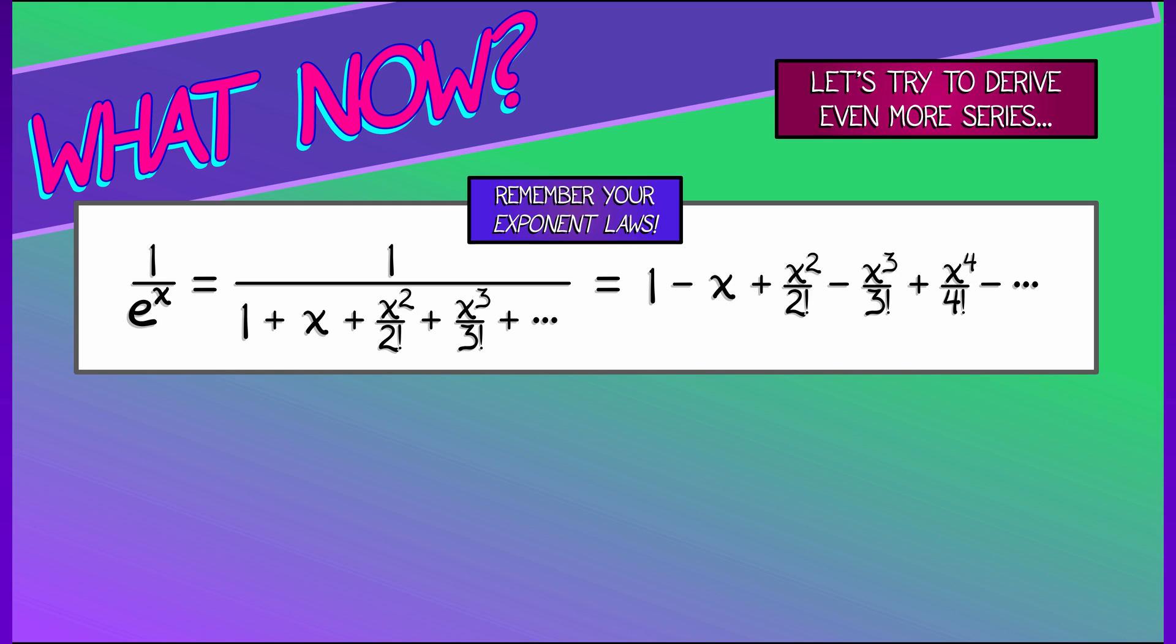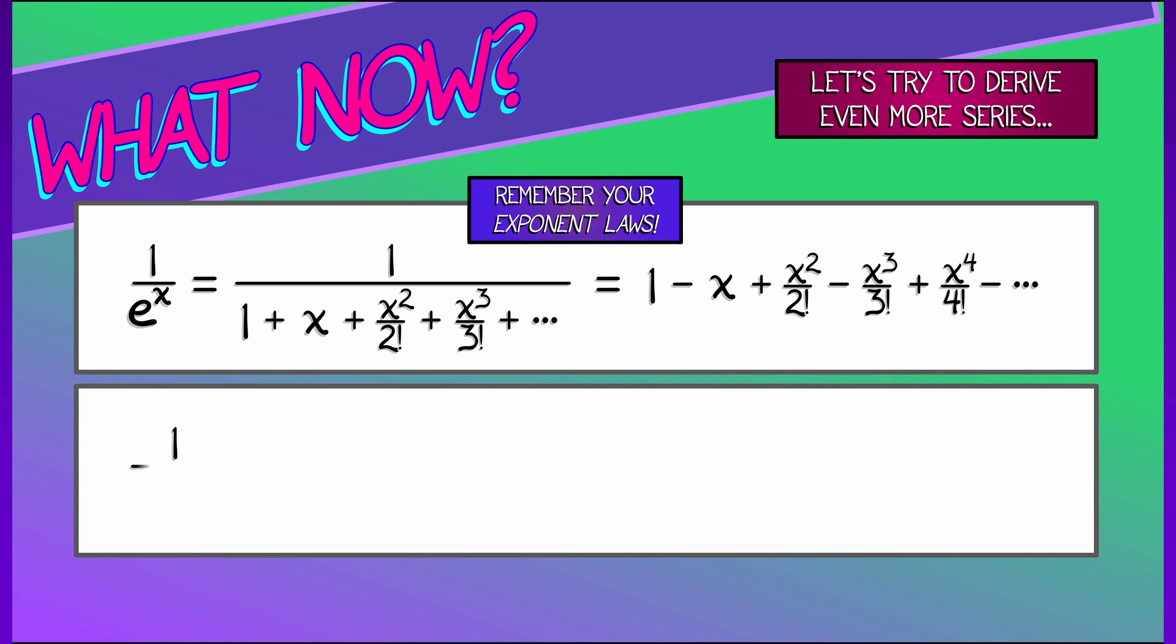Now that we've done that, I bet we can do a lot more. What's 1 over cosine of x? That is literally 1 divided by 1 minus x squared over 2 plus x to the fourth over 24, and so on. Now, what do I do?